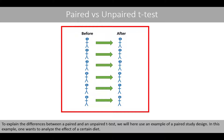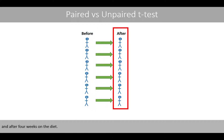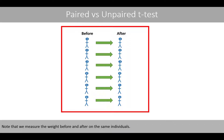In this example, one wants to analyze the effect of a certain diet. The body weight has been measured on six individuals before and after four weeks on the diet. Note that we measure the weight before and after on the same individuals.